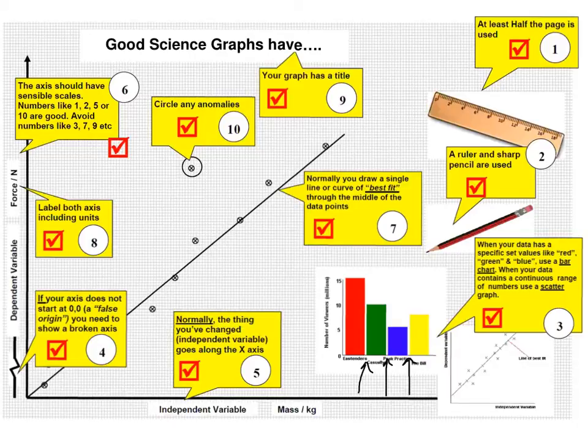When we've got data that's continuous, a continuous range of numbers, we use a scatter graph. Some people refer to it as a line graph, but that's not technically true. It's a scatter graph where you have particular points scattered on the graph, and then we draw, if need be, a line of best fit.